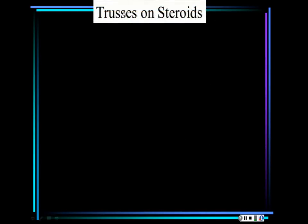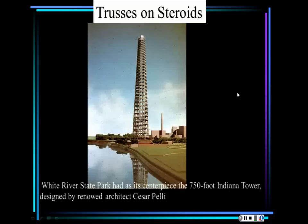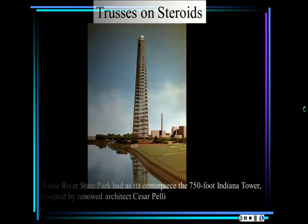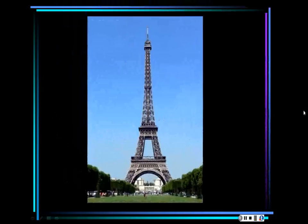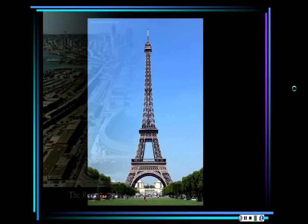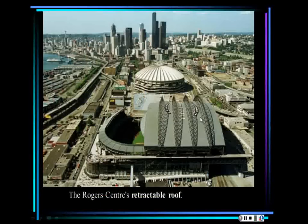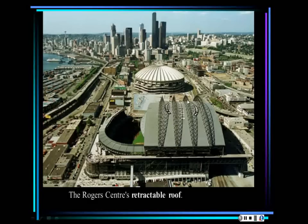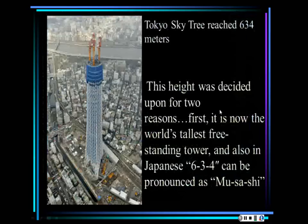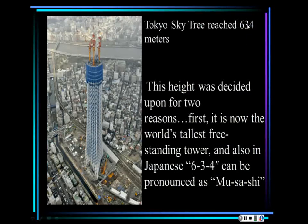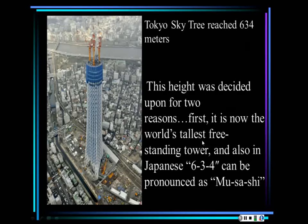Now look at these spectacular trusses. This is White River State Park, a 700-foot Indiana Tower. Of course, the Eiffel Tower is also trusses. This is the Rogers Centre retractable roof in Toronto — trusses. Tokyo Sky Tree is 634 meters. The name in Japanese is Musashi, which means 634, and that's why they wanted to reach that height.